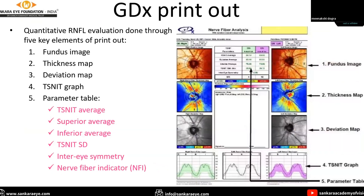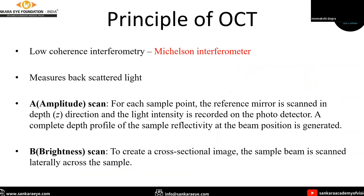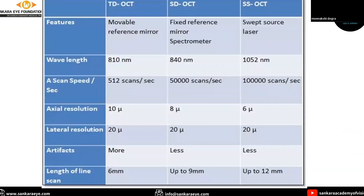This is how the GDX printout looks like, and we need to go through the five key elements of the printout. Moving on to OCT, it is a non-invasive diagnostic imaging technique which provides high-resolution cross-sectional and quantitative analysis. It is based upon the principle of low-coherence interferometry using a Michelson interferometer. There are three types of OCT: time-domain OCT, spectral-domain OCT, and swept-source OCT.